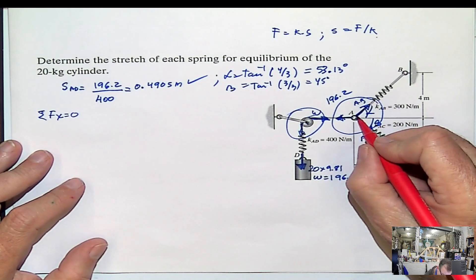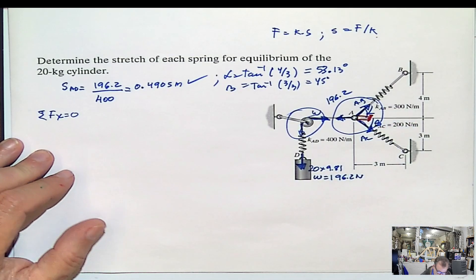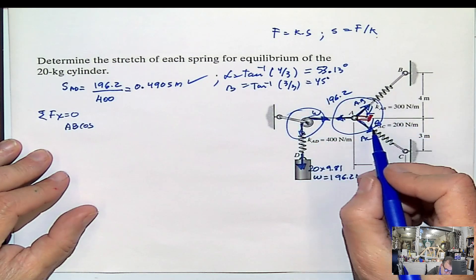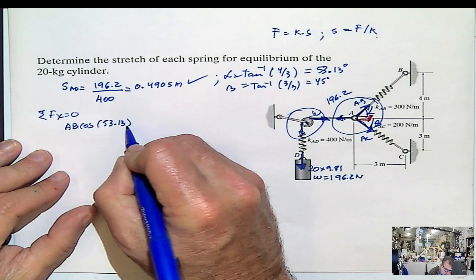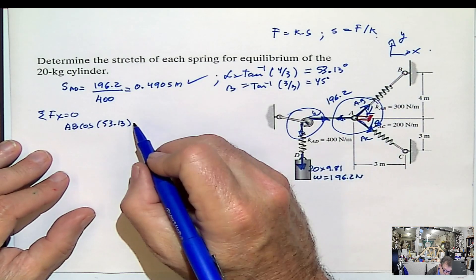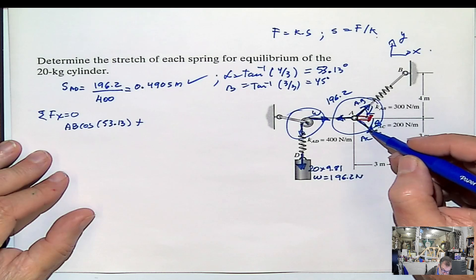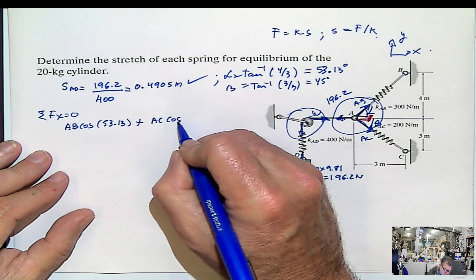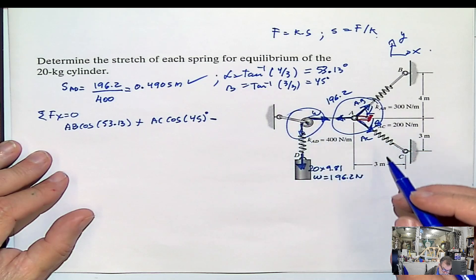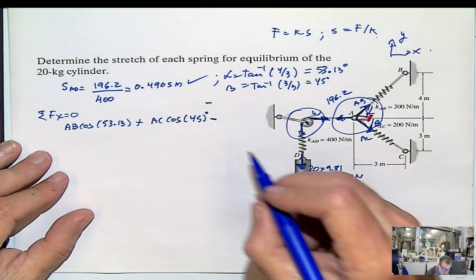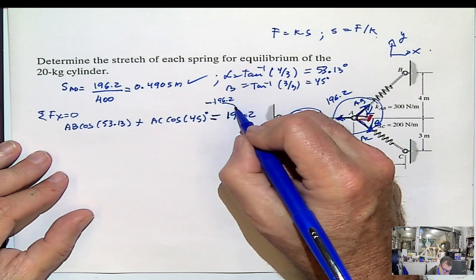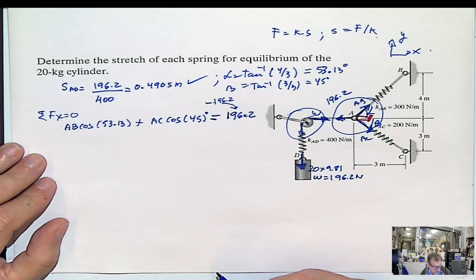What do we have in x? We have this component for AB, this component for AC. What is the value for this component for AB? That will be AB cosine alpha, because it's adjacent to alpha. To the right, we're assuming this, once again, positive to the right and up. Plus this component for AC, and that will be AC cosine beta. Cosine beta, 45 degrees. And then we have this force going to the left, minus 196.2. But I really want to pass it to this side just to skip one step of copying. So I'm going to pass it to this side as positive.